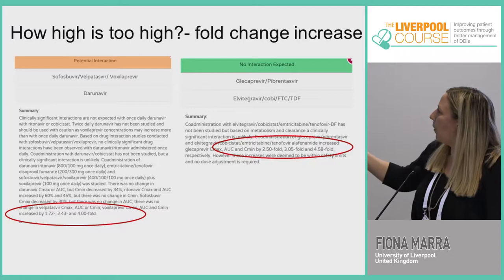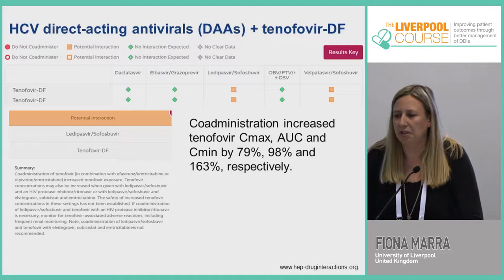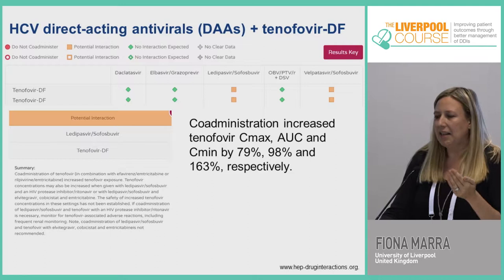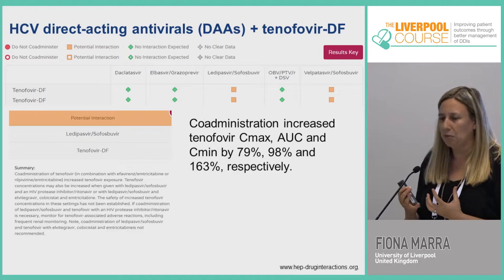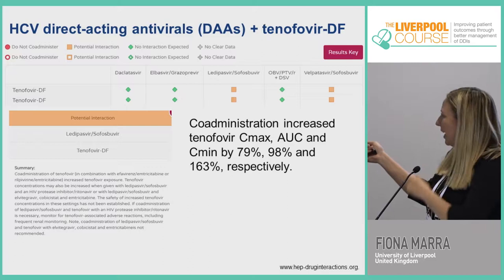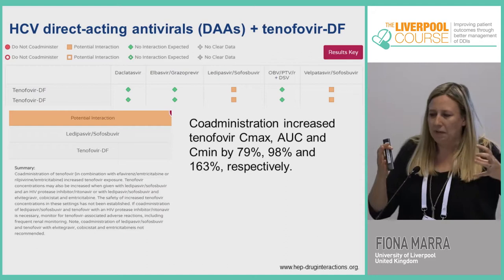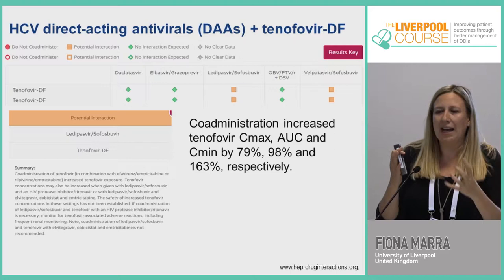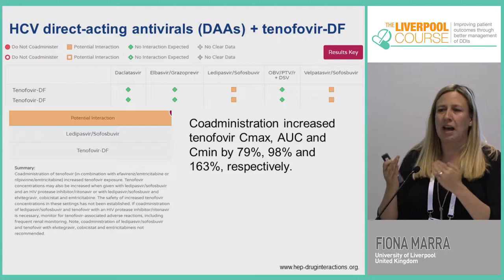However, with sofosbuvir/velpatasvir/voxilaprevir (Vosevi) we have lower levels but still a caution. Tenofovir appears as an amber interaction with many Hepatitis C DAAs, particularly those containing ledipasvir or velpatasvir, because of P-glycoprotein inhibition — you get an increase in tenofovir levels. The data shows increases in C-max, AUC, and C-min of 79%, 98%, and 163% respectively. Given the renal monitoring needed for tenofovir anyway, adding ledipasvir may require additional renal monitoring.